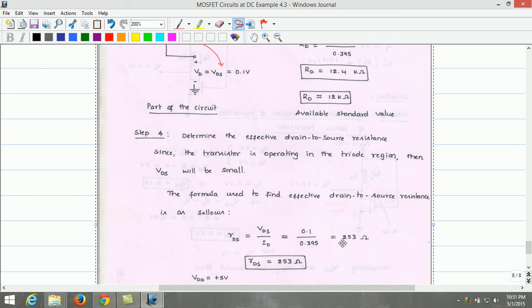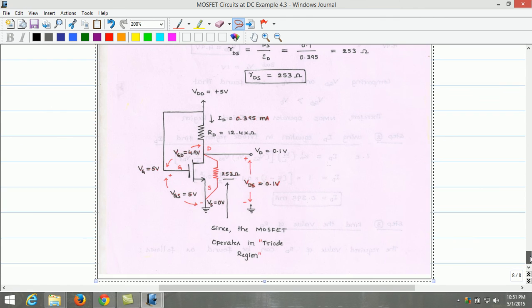We can observe here, the RDS value, drain-to-source resistance value is very small, 253 ohms. Now, we can complete the circuit by substituting all the values which we have estimated.